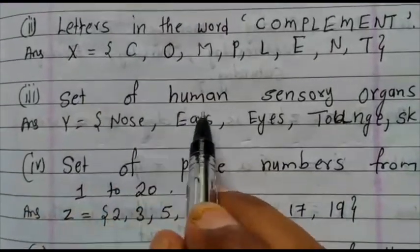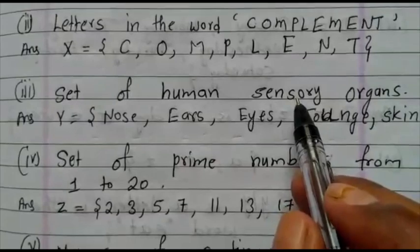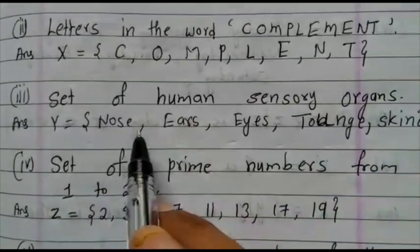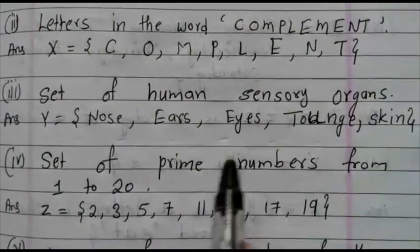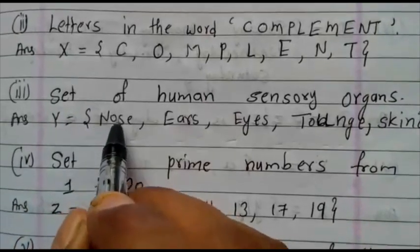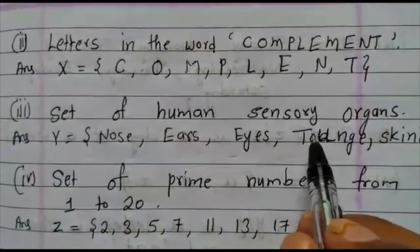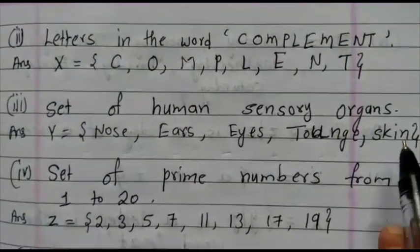Next question. Set of human sensory organs. Which one is the human sensory organ? You know very well, those are the five organs: nose, ears, eyes, tongue, and skin. How to write? Y equals in the curly bracket nose, comma, ears, comma, eyes, comma, tongue, comma, skin, curly bracket close.